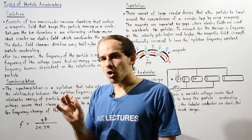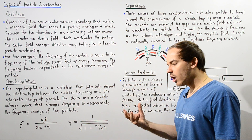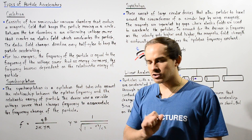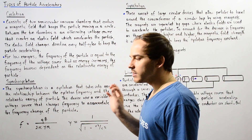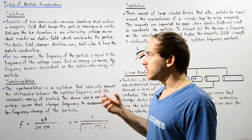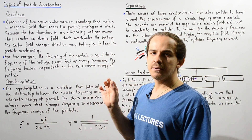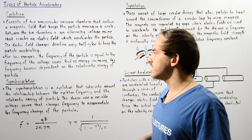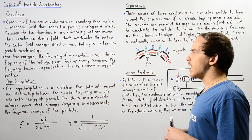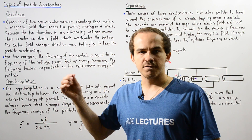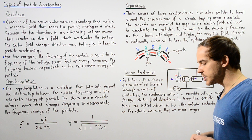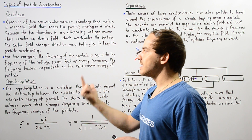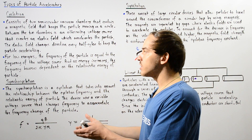The cyclotron is only really able to accelerate our particles to velocities that aren't that high — not very close to the speed of light. That's because when the velocities are low, our particle's radius of curvature does not depend on the velocity, and so the frequency does not depend on our velocity. For low energies, the frequency of a particle is equal to the frequency of the voltage source, and this is known as the cyclotron frequency. For this reason, the cyclotron is not able to accelerate our particle to a high velocity.